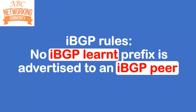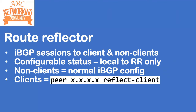A quick recap on iBGP rules: no iBGP learned prefix is advertised to an iBGP peer. This leads to the requirement of having a full mesh of iBGP peers, and full mesh networks do not scale. Route reflectors can help here.